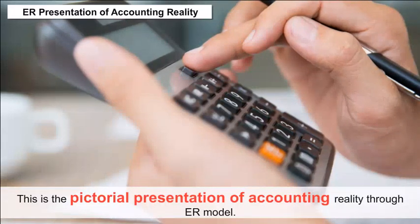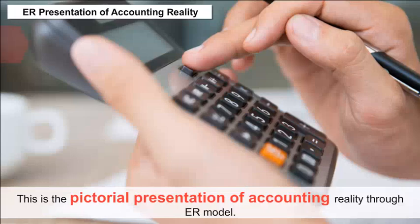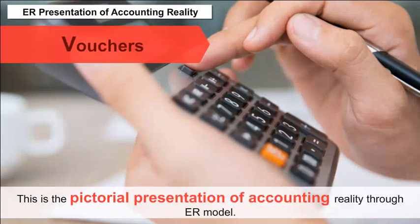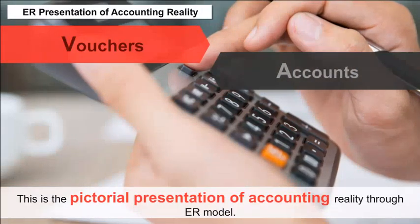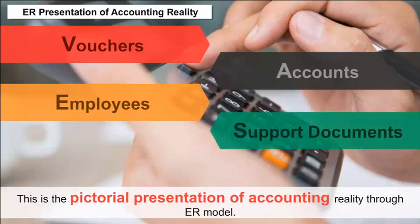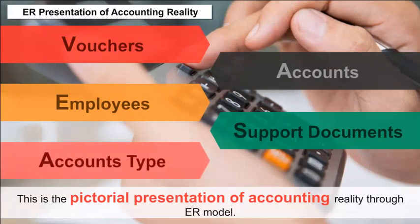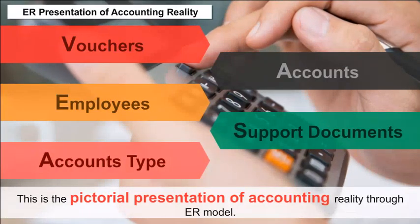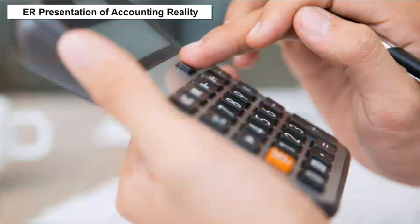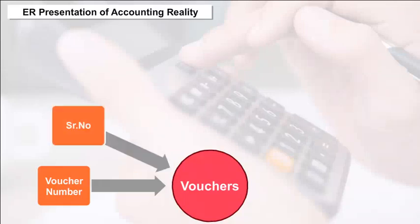ER Presentation of Accounting Reality — this is the pictorial presentation of accounting reality through the ER model. We are taking five entities to explain the accounting reality: Vouchers, Accounts, Employees, Support Documents, and Accounts Type. In the Vouchers entity, attributes include voucher number, serial number, voucher date of creating, debit, credit account, amount, narration, authorized by, and prepared by — used for storing transaction data.